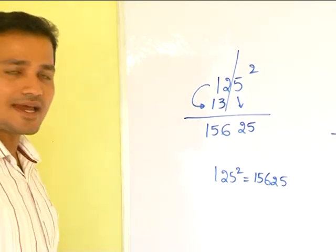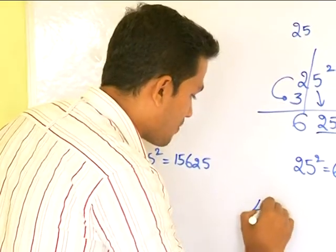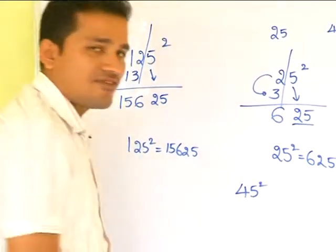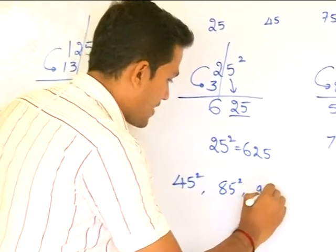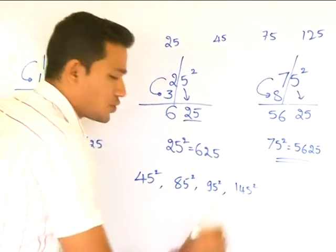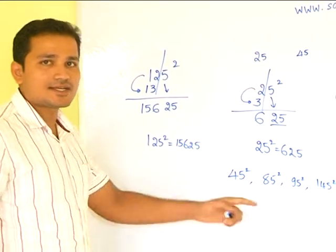Easy? On a similar type, you can obtain the square of 45, 85, 95, 145 and so on. Pretty easy, right?